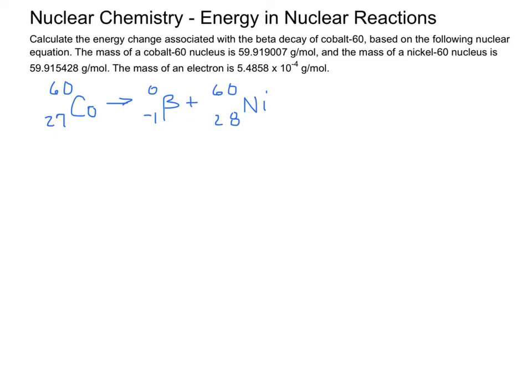In this case, we have our nuclear equation. And, we know we're going to use delta E equals delta M times c squared. Don't forget to square the c. The first thing we need to find is delta M. And, when you're doing a change, it's always the final minus the initial, the product minus the reactants.